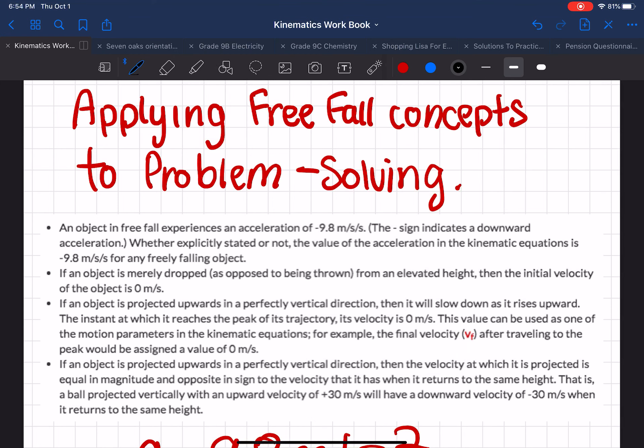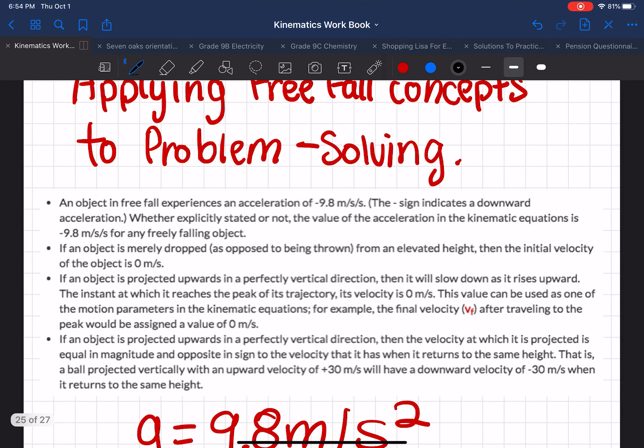If an object is merely dropped, as opposed to being thrown from an elevated height, then the initial velocity of the object is 0 meters per second. If an object is projected upwards in a perfectly vertical direction, then it will slow down as it rises upwards. The instant at which it reaches the peak of its trajectory, its velocity is also 0 meters per second.